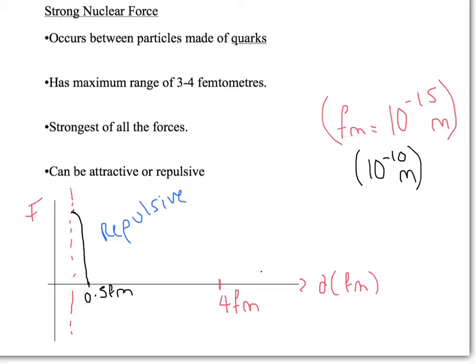After 0.5 femtometers, it becomes attractive. This is what binds together the nucleus - this is why the protons and neutrons don't go shooting off in all different directions. You'd think the protons, being both positively charged, would repel each other through electromagnetic. But the strong force is the strongest of all the forces. As soon as they're in this range between 0.5 and 4 femtometers, the strong force will take over and bind together the nucleus, which is why the nucleus is such a small part of the atom.